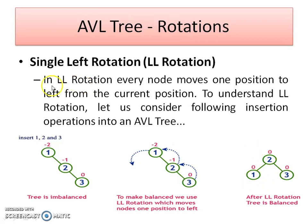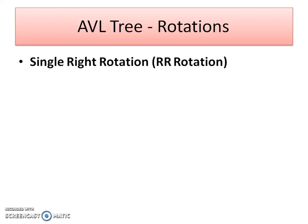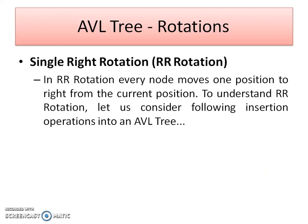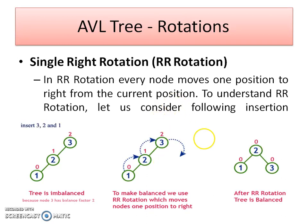In LL rotation, every node moves one position to the left from its current position. Now let's go to the next single rotation, which is the right rotation — RR rotation. Again, before explaining this, I would like to explain the RR rotation with the help of an example. Now I am going to insert data in descending order. Again, it forms a skewed binary tree — it is a binary search tree, but it is not satisfying the balance factor property.